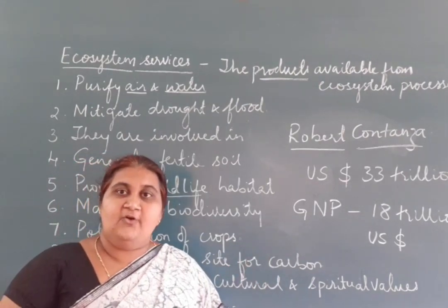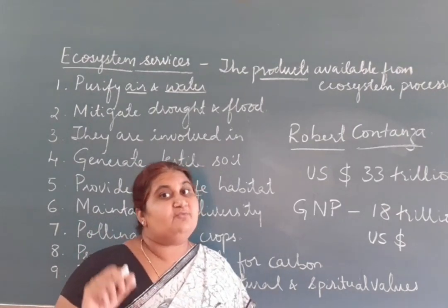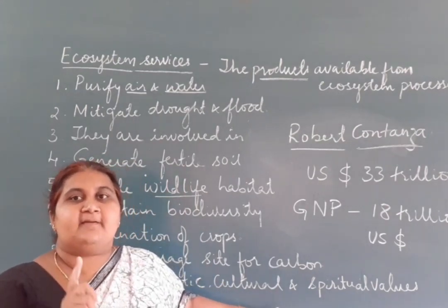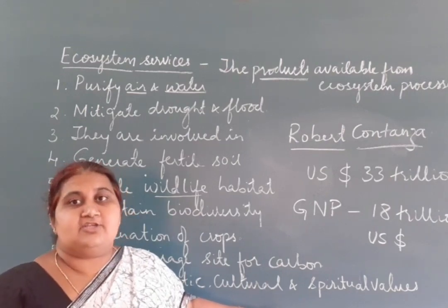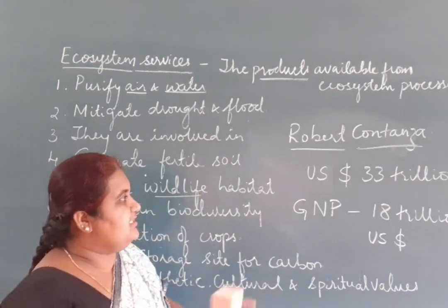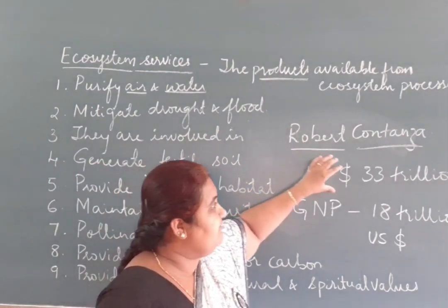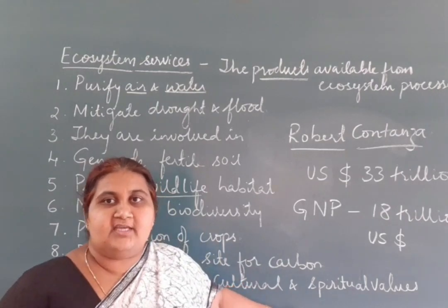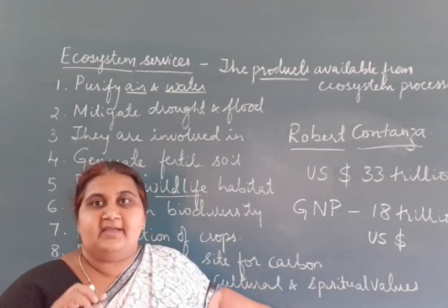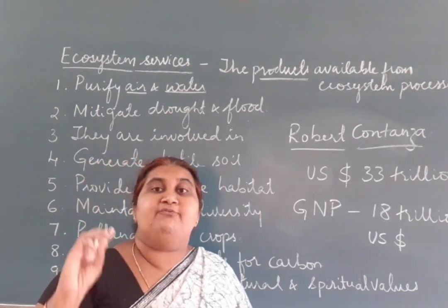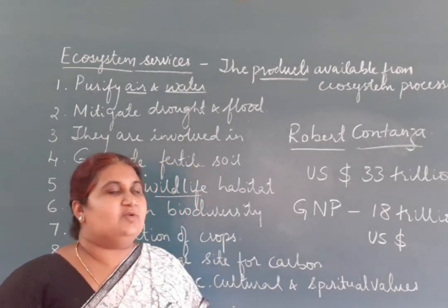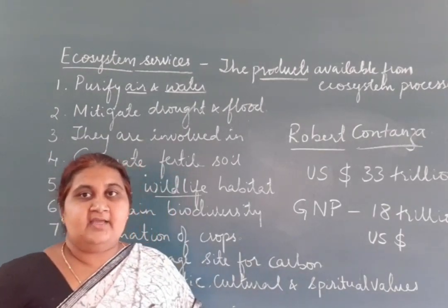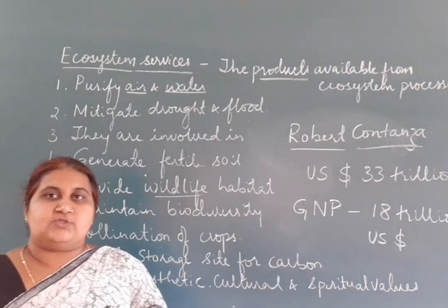If we go to buy a cylinder of oxygen, we will understand the value of nature. It is our responsibility to conserve natural resources. According to Robert Costanza, among the 33 trillion US dollars, around 50% goes toward soil formation and maintaining soil fertility — generating fertile soil. These are the ecosystem services: the products obtained from ecosystem processes.